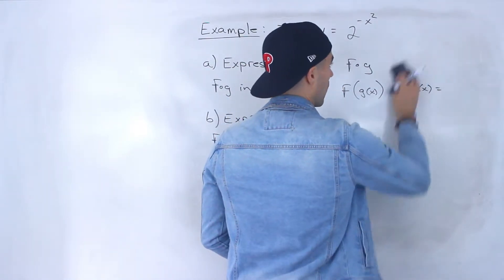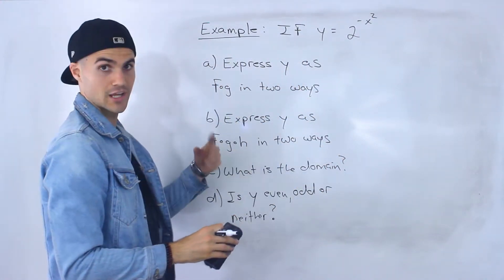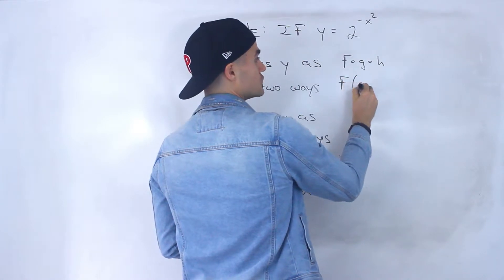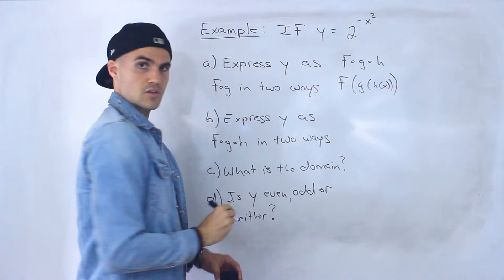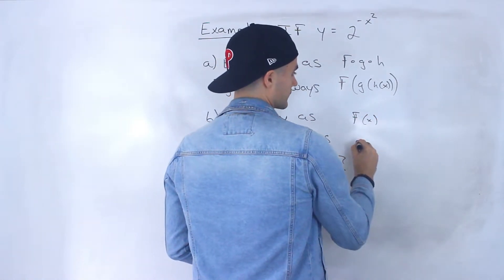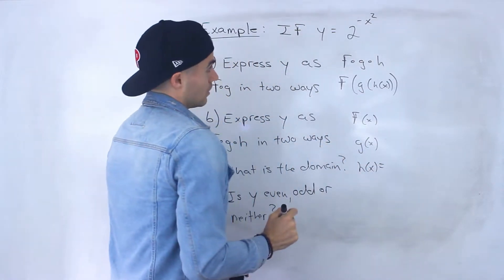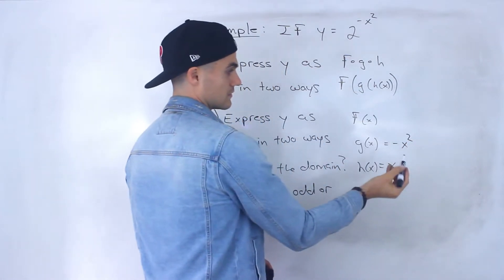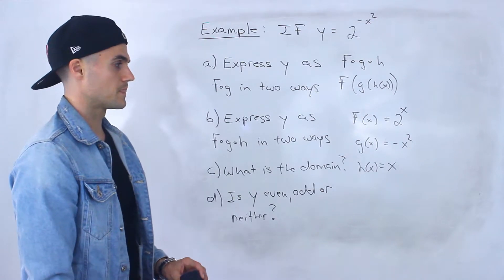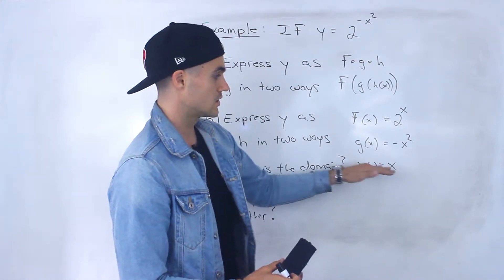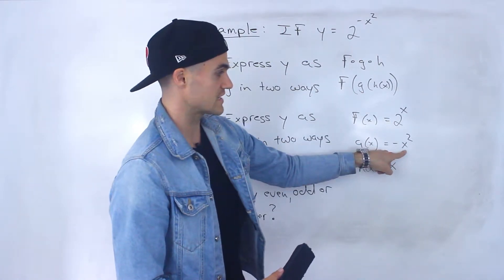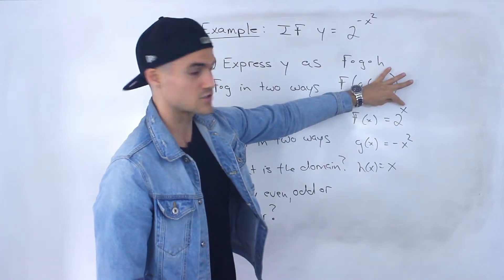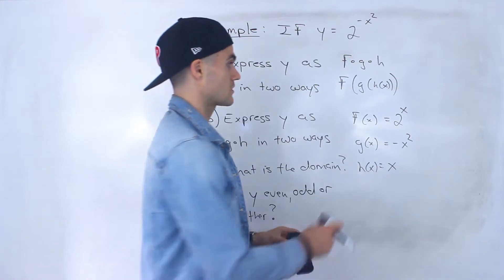Now part B, we have to express y as f of g of h in two different ways — so in terms of three functions. f of g of h is the same as f of g of h of x. So this one is going to be a little bit trickier. Well, what if we let h of x be x, g of x be negative x squared, and then f of x be 2 to the power of x? That's one way. Notice if h of x is x, then g of h of x — we'd plug in this x value for this x value — which would just give us negative x squared again. And then f of g of h of x, which is f of negative x squared, we would plug in negative x squared for that x right there. So we'd end up with 2 to the power of negative x squared.